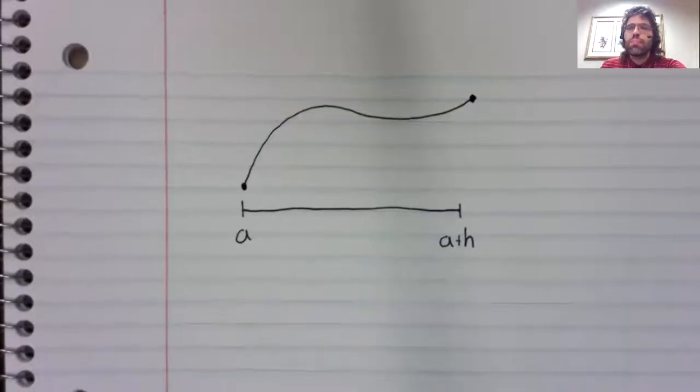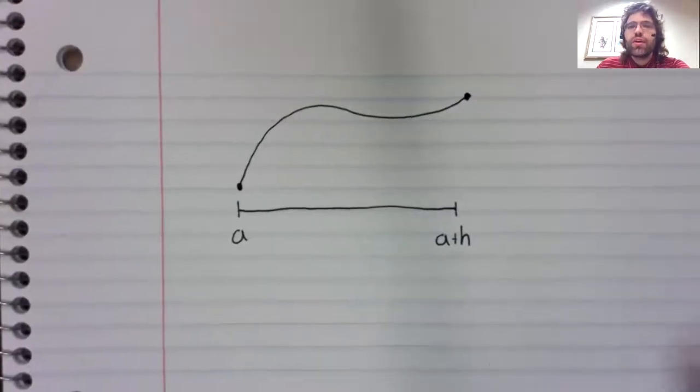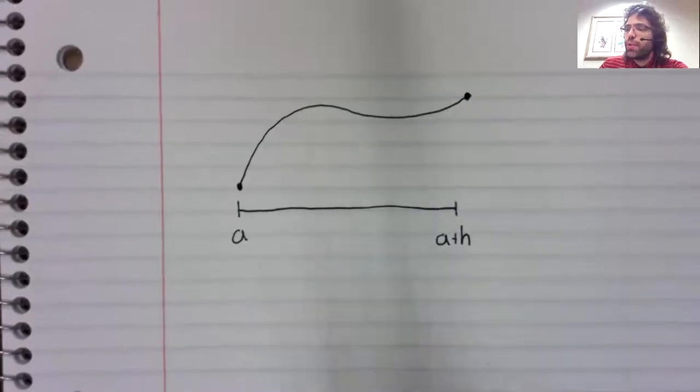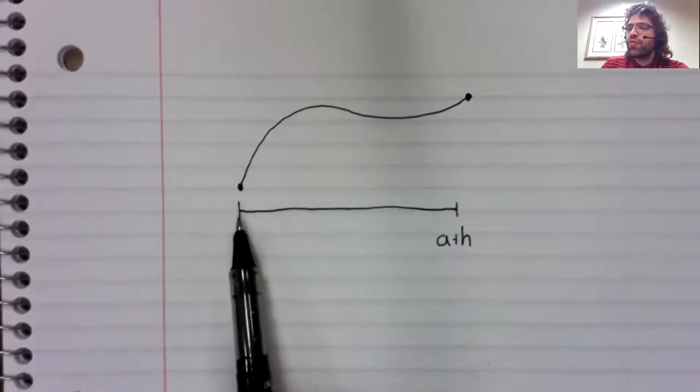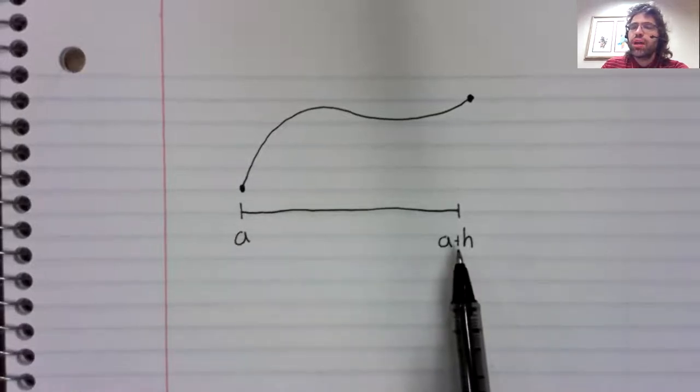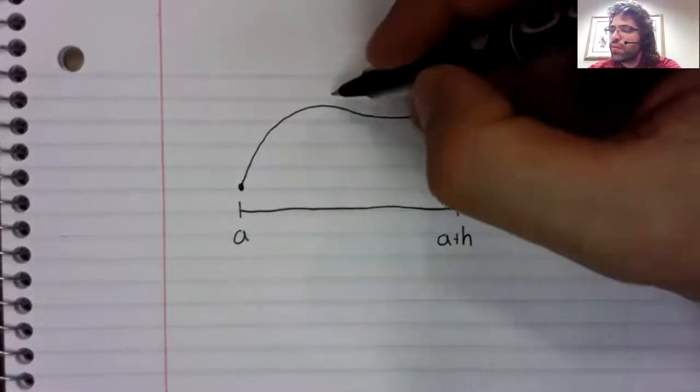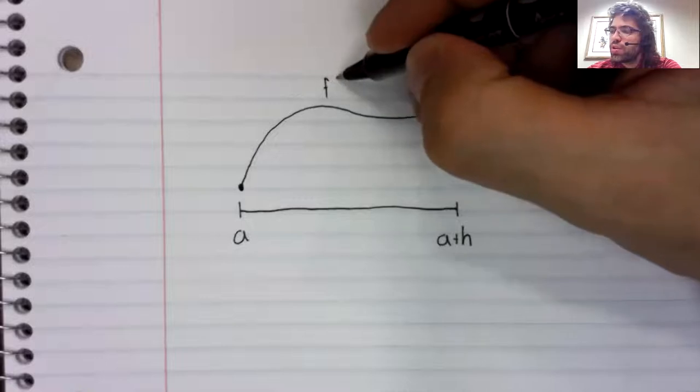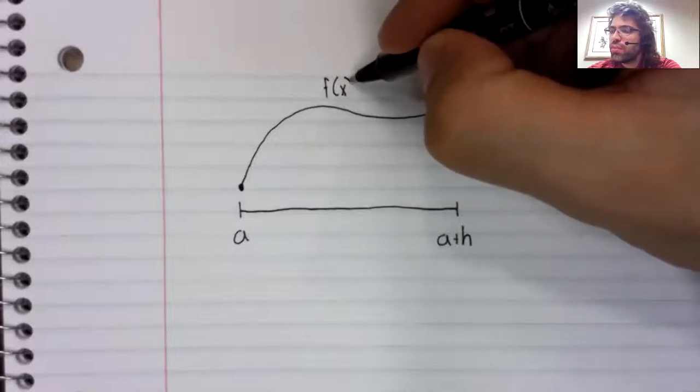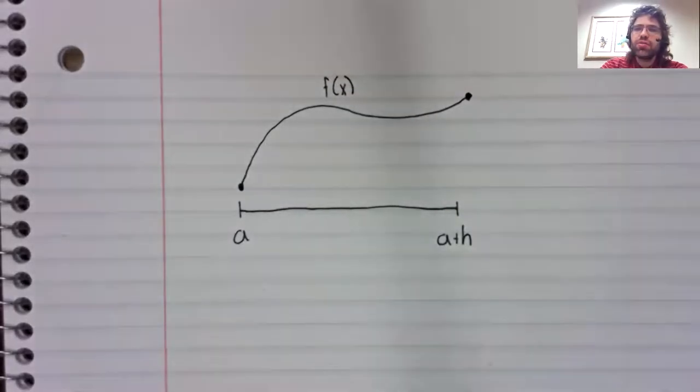We'll remain in the setting we have been in, where we're looking at intervals of the form a comma a plus h. And we have a curve, some function f of x.